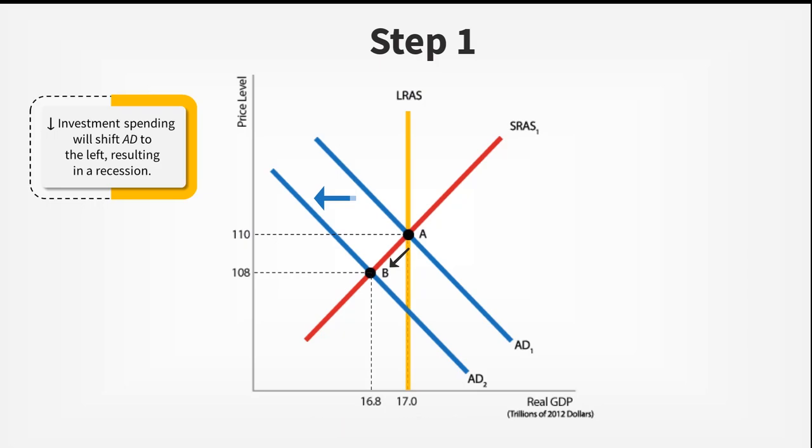At the lower level of output, employers will reduce the number of workers they employ, increasing the unemployment rate. Looking at the x-axis on the graph, you can see that potential output is still $17 trillion, but current output has decreased to $16.8 trillion. In this case, the gap between output at B and the long-run potential at point A represents a recessionary gap.